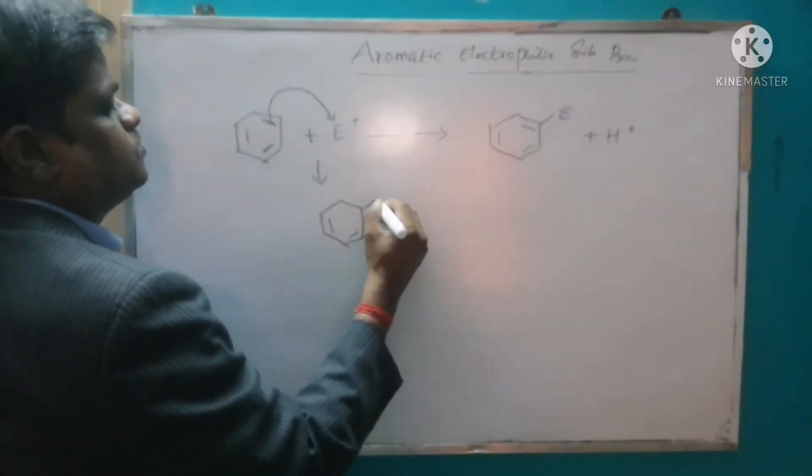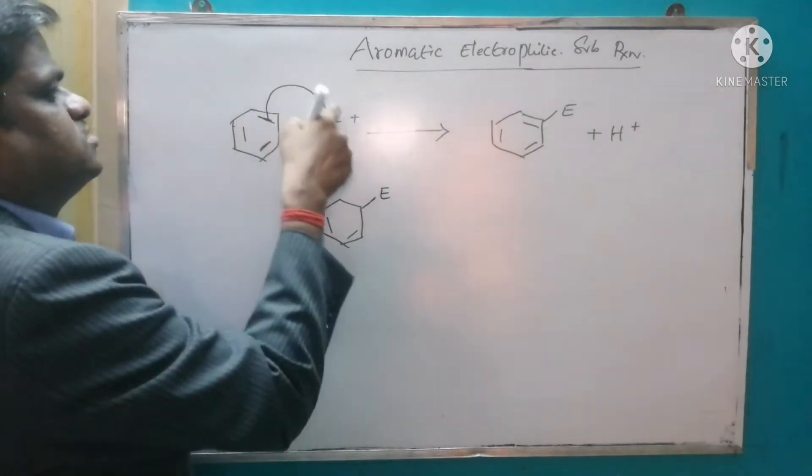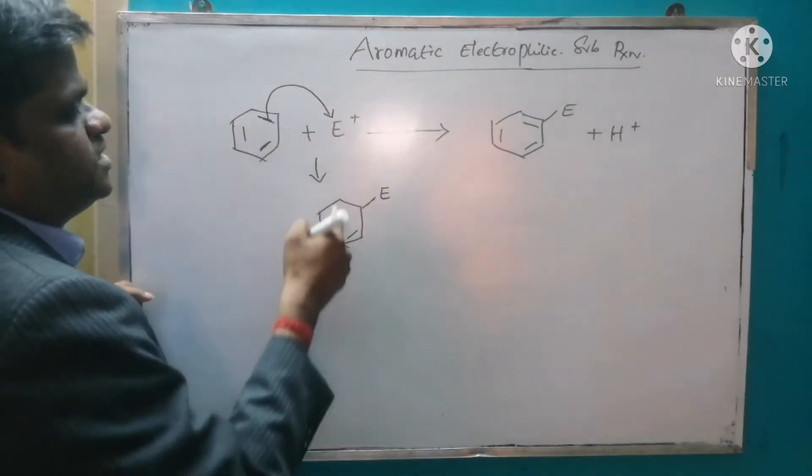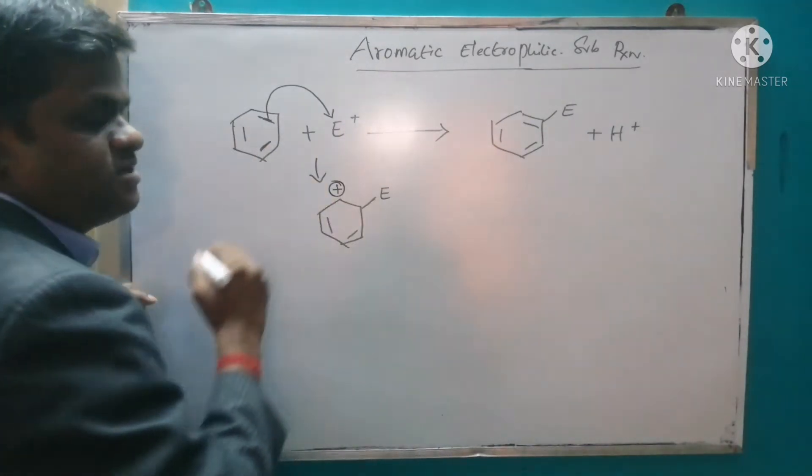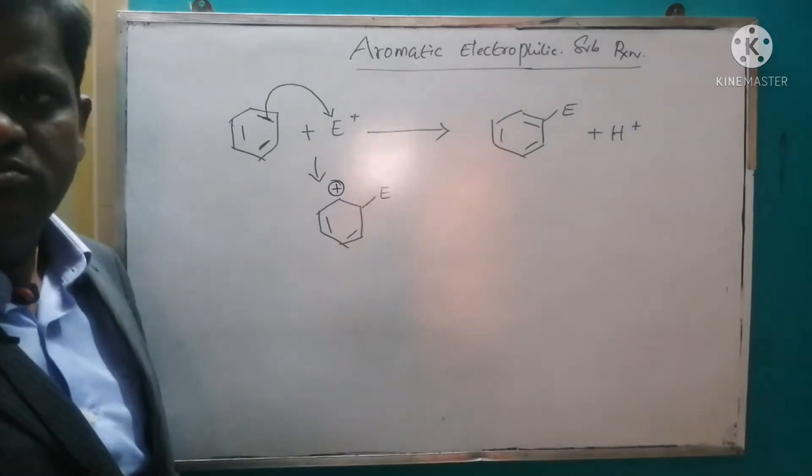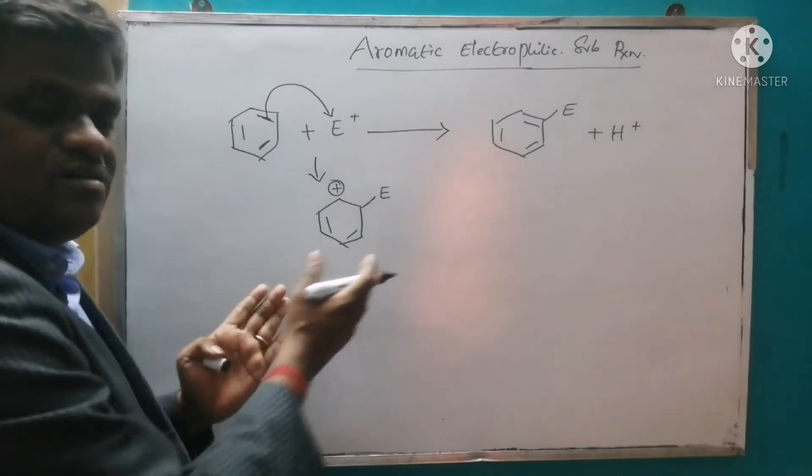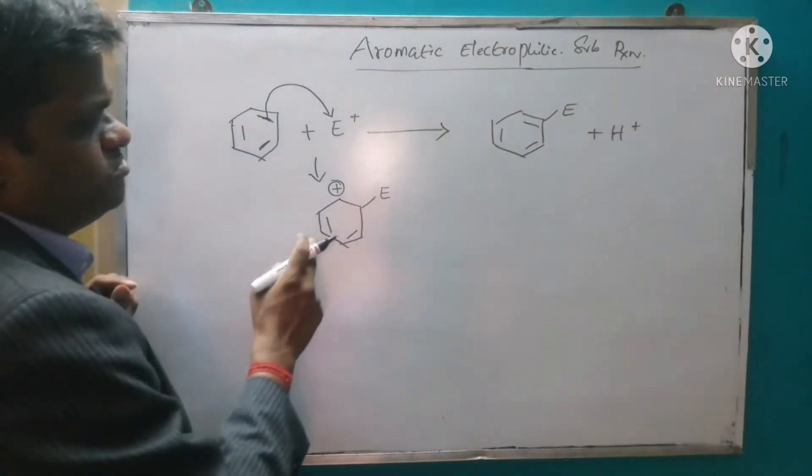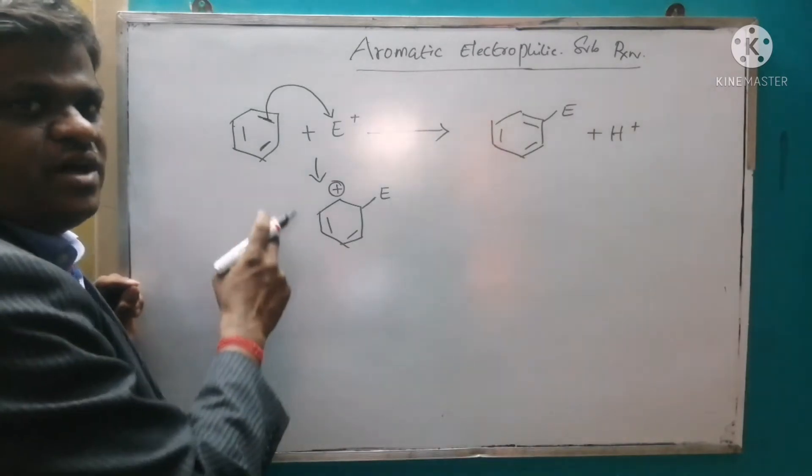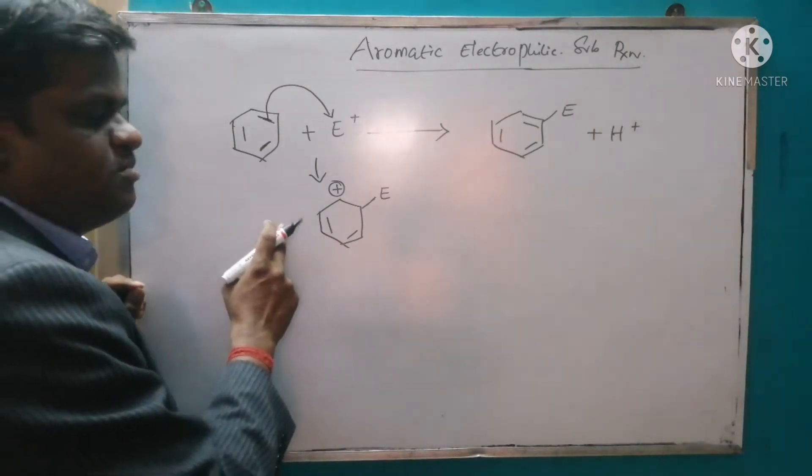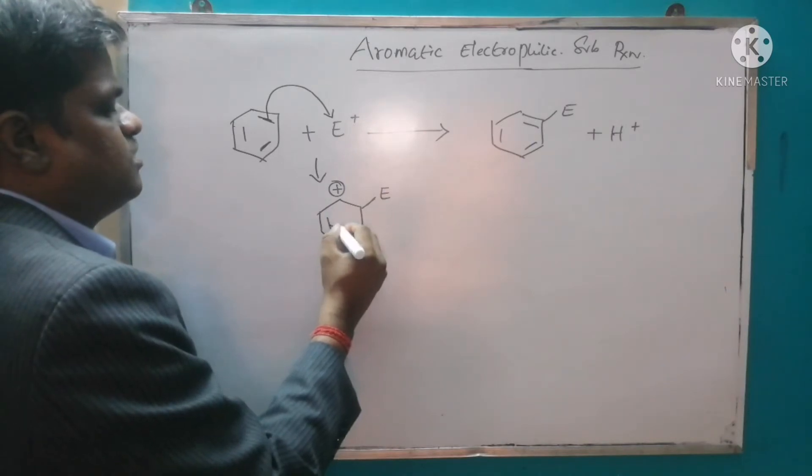Now this electron is getting shared with this electrophile, that means this carbon lost the electron, that means this will get the positive charge. Now we are going to see the resonant structures of this benzenium ion and how the benzenium ion is going to stabilize.